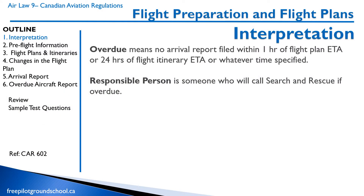In this lesson when we talk about flight plans, we're also going to talk about flight itineraries. These are documents that we file to make sure that if we don't show up when we're supposed to show up, somebody's going to come look for us. Overdue means an arrival report is not filed within one hour of a flight plan estimated time of arrival, or 24 hours of a flight itinerary estimated time of arrival.